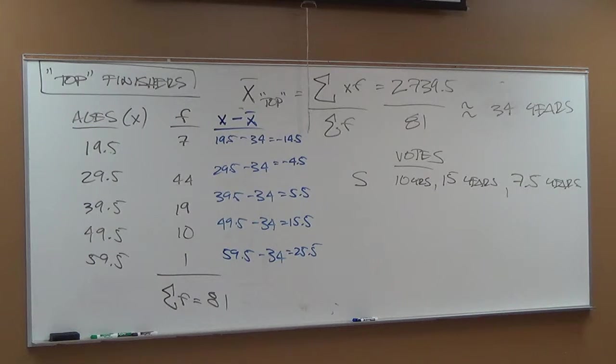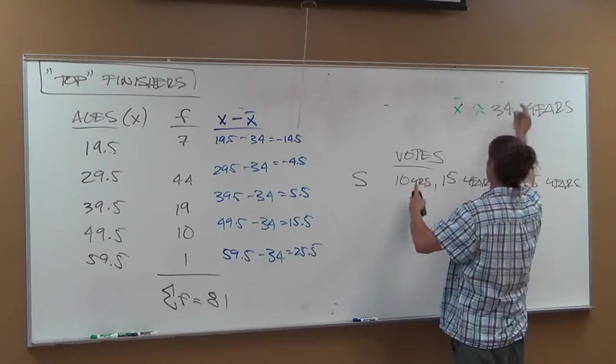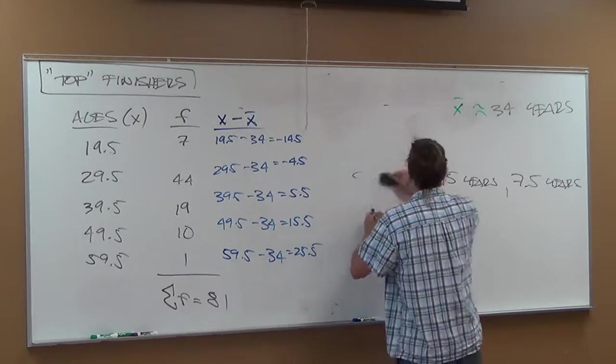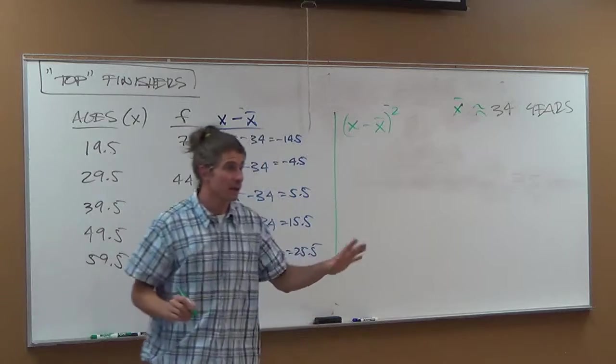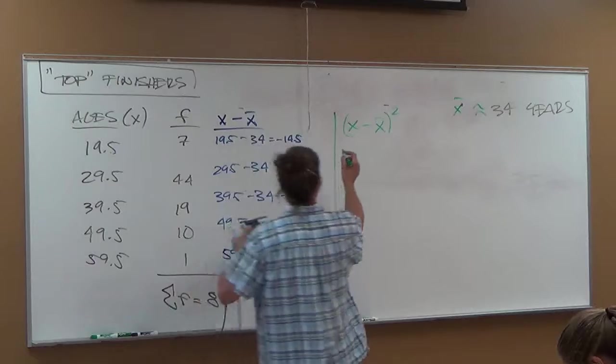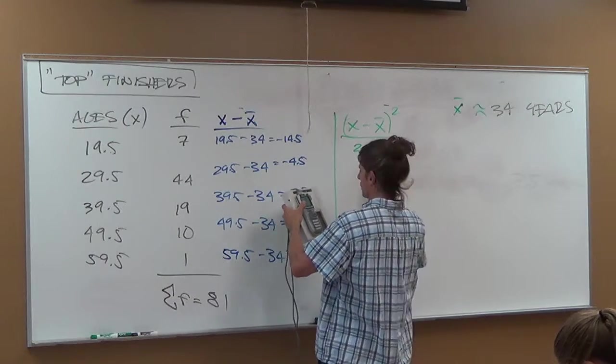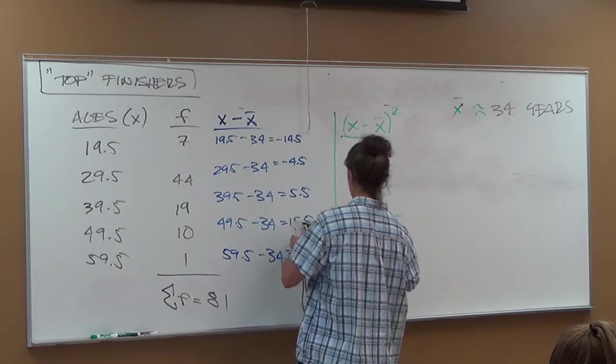Let me grab my green marker. The first thing I want to do is I'm going to erase part of this calculation and I'm going to put it over here. So x bar is about 34, we're going to leave that here. We're going to remember these folks, 10, 15, 7.5. The first thing I want you guys to do is I want you to square the differences. Because we had to do that with Bert and Ernie too. Square those differences. Square them because we have to get them into that non-negative world. So we're going to square those differences. So I get 210.25, I get 20.25, 30.25, 240.25 and 650.25.